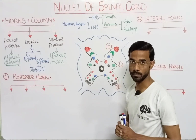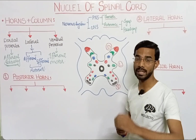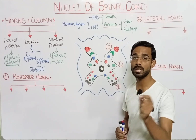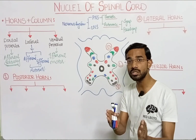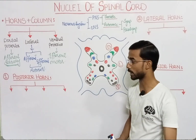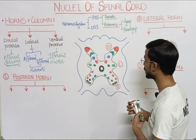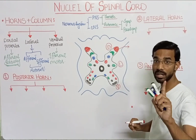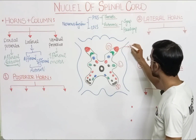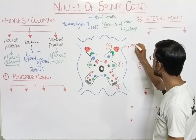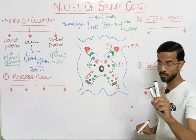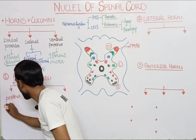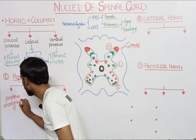Next we will discuss the posterior horn. You will see different nuclei here. Nuclei are basically collections of cell bodies in the central nervous system — brain and spinal cord. If you see collections of cell bodies in the peripheral nervous system, then it is called the ganglia. The first nucleus in the posterior horn is present at the margin, so it is called the posterior marginal nucleus.